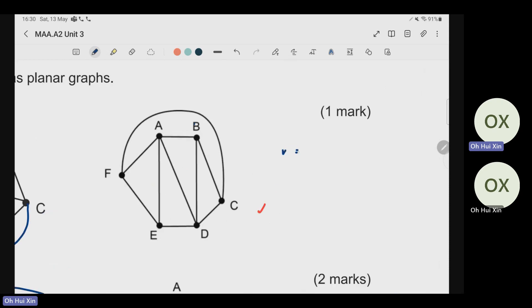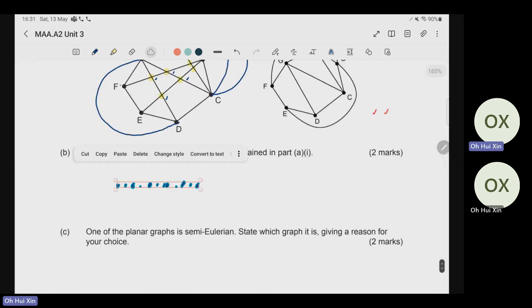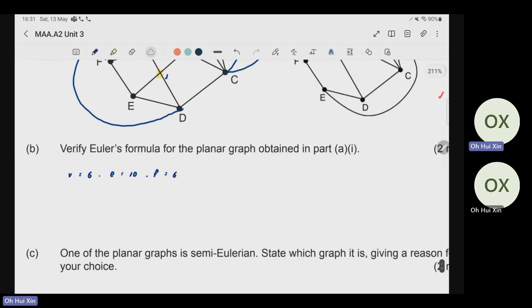So when you look at part A1, the number of vertices, I have A, B, C, D, E, F, so that's six. Number of edges, I have one, two, three, four, five, six, seven, eight, nine, ten. So ten edges. And after that, for faces, then I have one, two, three, four, five, and then six outside. Remember that every time when you are asked to verify Euler's formula, the first thing that you do is count the number of vertices, the number of edges and number of faces first.